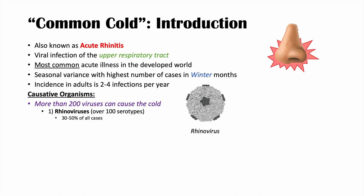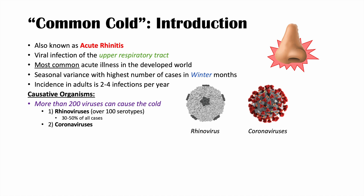The second category of viruses are the coronaviruses. We've heard about coronaviruses like the one that causes COVID-19, but here we're talking about the four common coronaviruses that cause the common cold: HCOV-229E, HCOV-NL63, HCOV-OC43, and HCOV-HKU1. These coronaviruses occur on a seasonal basis and cause approximately 10 to 15% of all cases of the common cold.